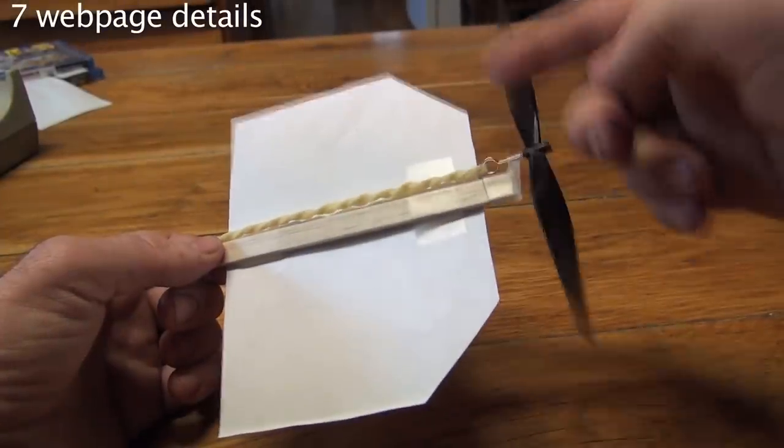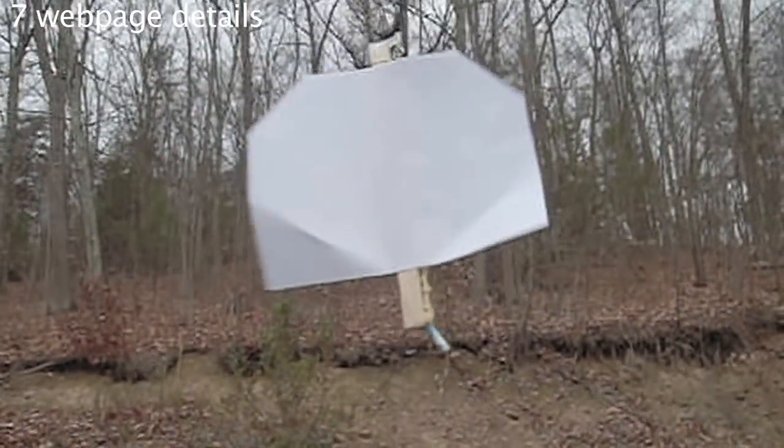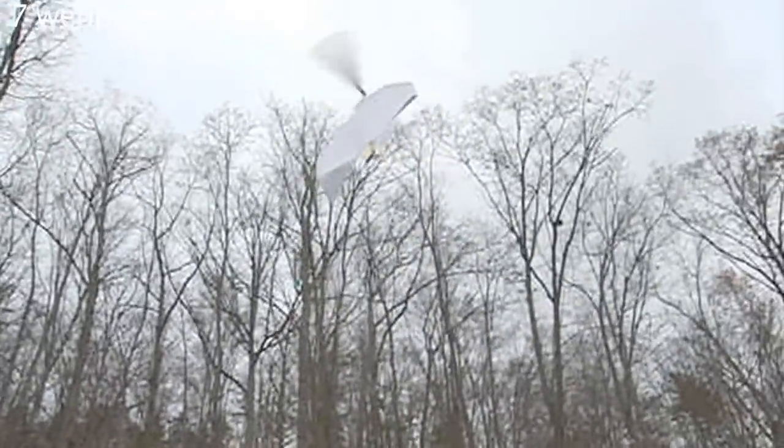If you don't have thin foam, you can make the wings out of paper. Although paper is heavier and it doesn't look like a dragonfly, it's easy and it flies almost as well.